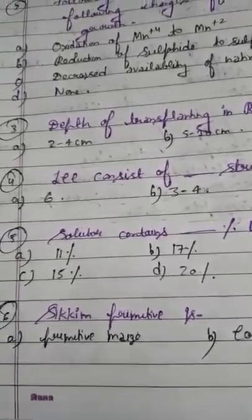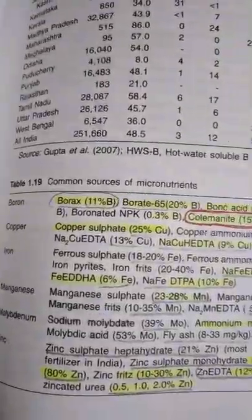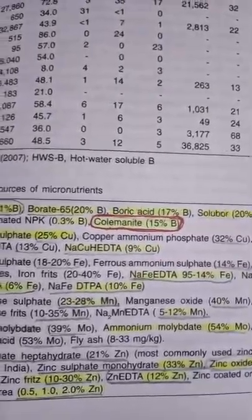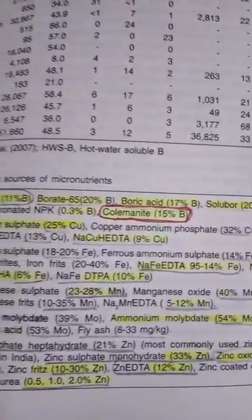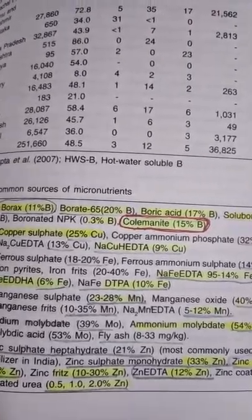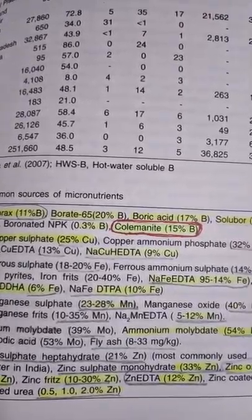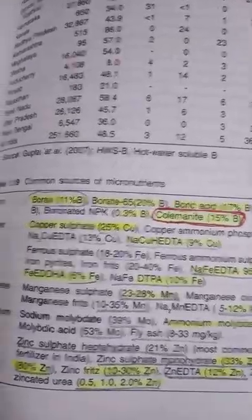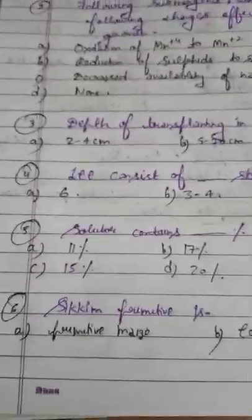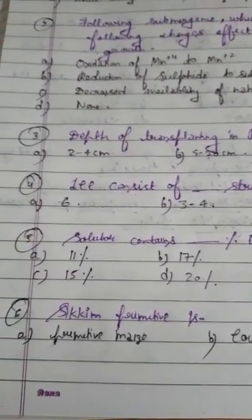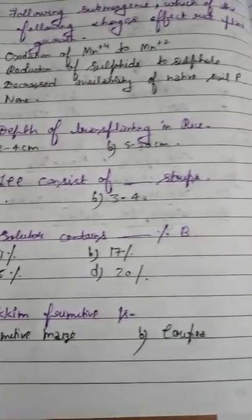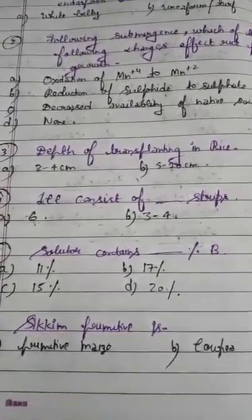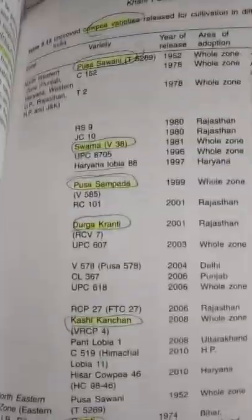Question 5: Solubor contains what percent boron? Option A: 11%, Option B: 17%, Option C: 15%, Option D: 20%. Please remember: borax contains 11% boron; boric acid contains 17% boron; solubor contains 20% boron; and colemanite contains 15% boron. These are very important.